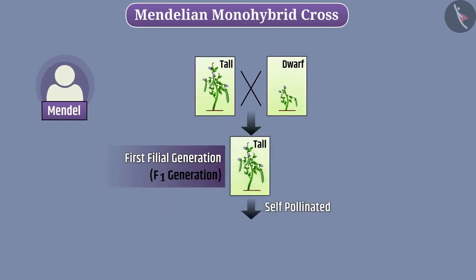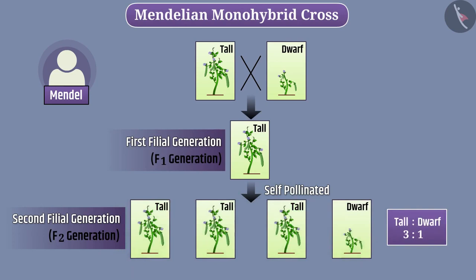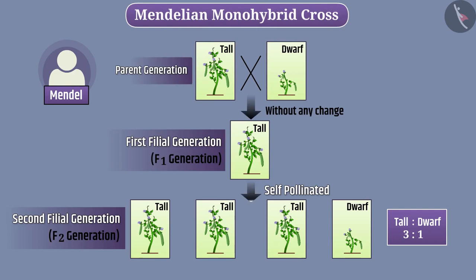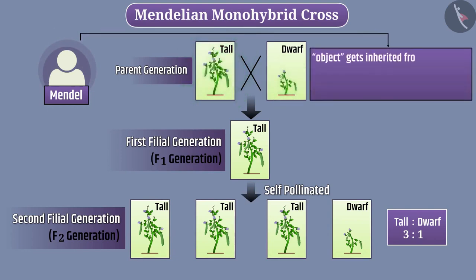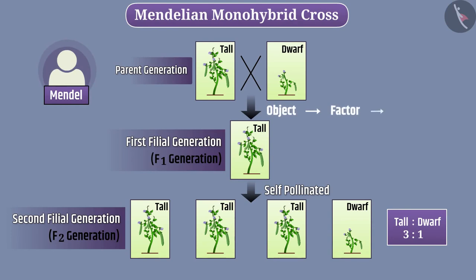Mendel self-pollinated the F1 generation plants and grew the F2 generation plants. In F2 generation, the ratio of tall plants to dwarf plants was 3:1. No plant was of intermediate height. This means that the information of tallness and dwarfness must have been transmitted without any change from parent generation through F1 to F2. Mendel proposed that a certain object gets inherited from the parent to the offspring during reproduction, which develops specific characters in the offspring. Mendel called this object a factor — we call it a gene. We can say that a gene is a unit of heredity.